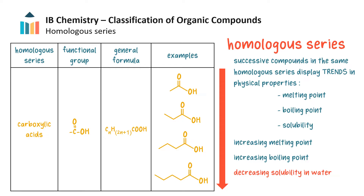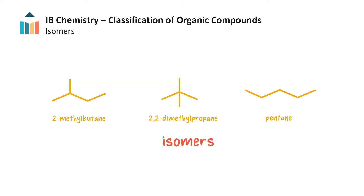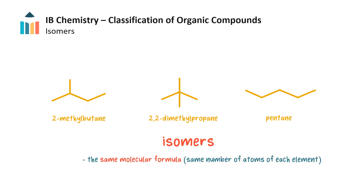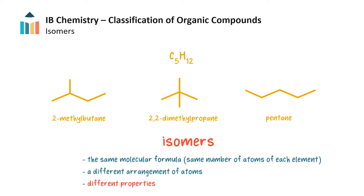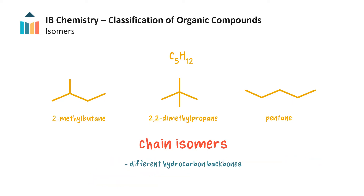Now let's turn our attention to isomers. The atoms and bonds in an organic compound can be arranged in different ways. The resulting compounds have the same molecular formula — in this example all three compounds have the molecular formula C₅H₁₂ — but they have different bonding patterns, so these are different compounds with different properties. These compounds are called isomers.